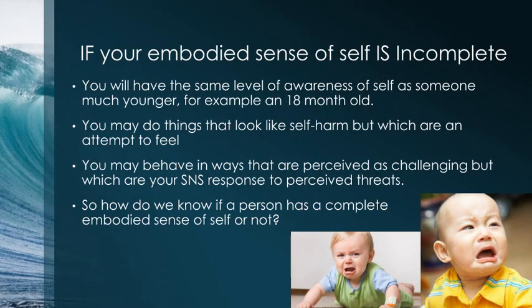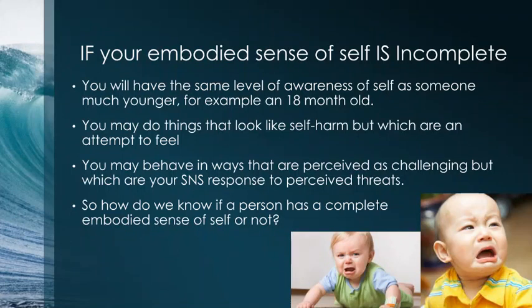If your embodied sense of self is atypical, you can feel quite fractured and disconnected from yourself, and therefore from people around you. Your embodied sense of self is developed as your interoceptive awareness develops, and if it's incomplete, you're actually operating at an internal level of awareness of self as someone much younger — for example, about 18 months old. This means interpretations of behaviour and emotions can be quite wrong.